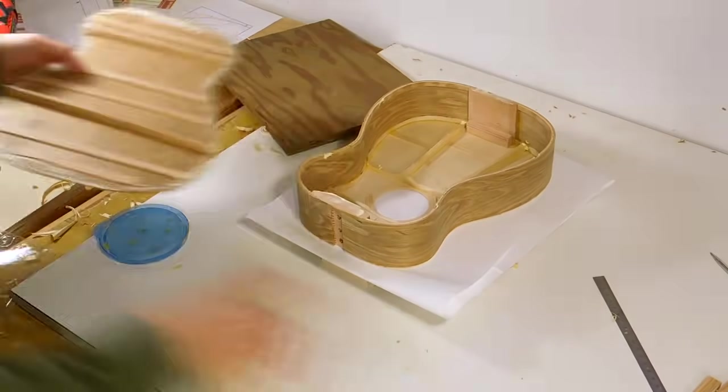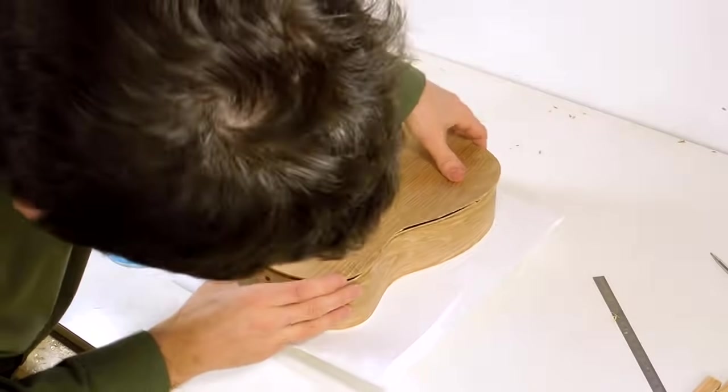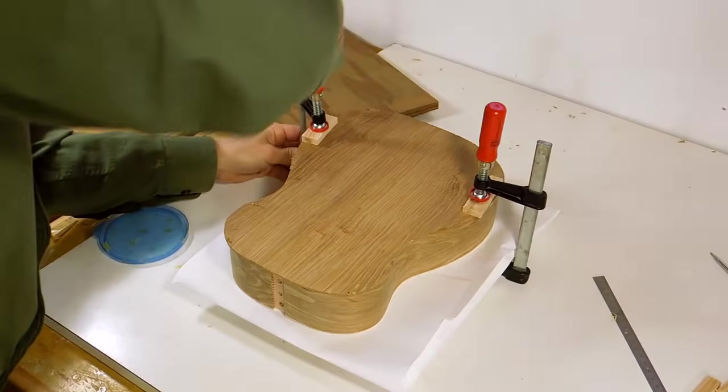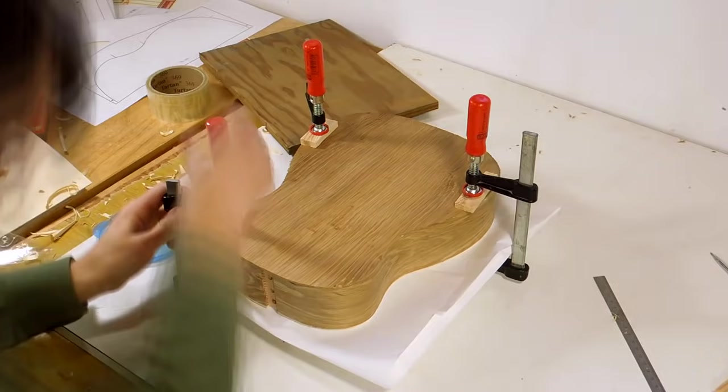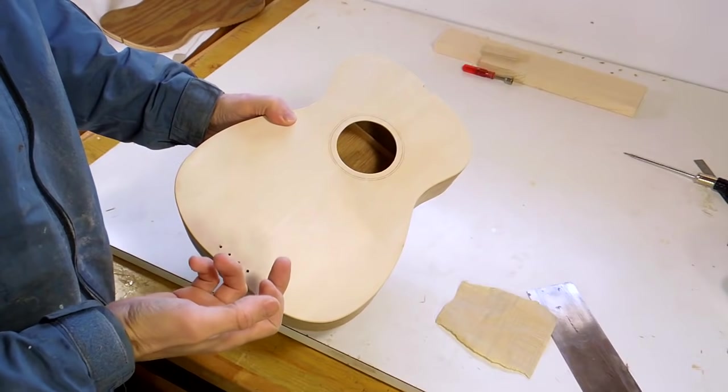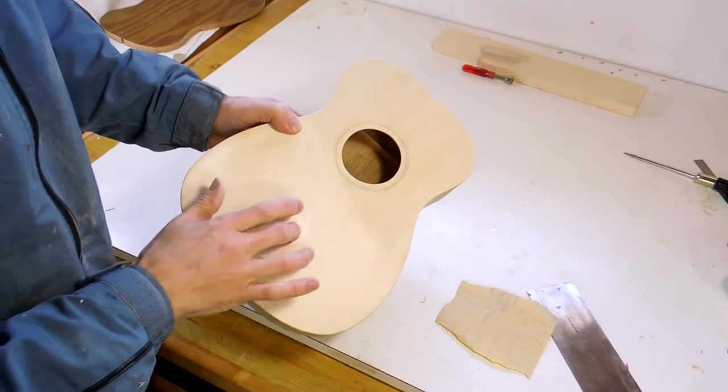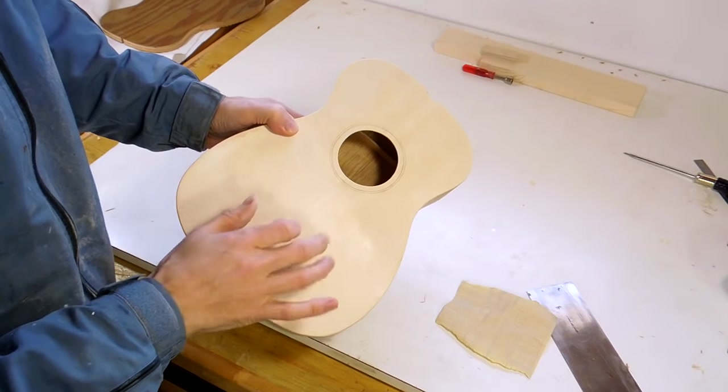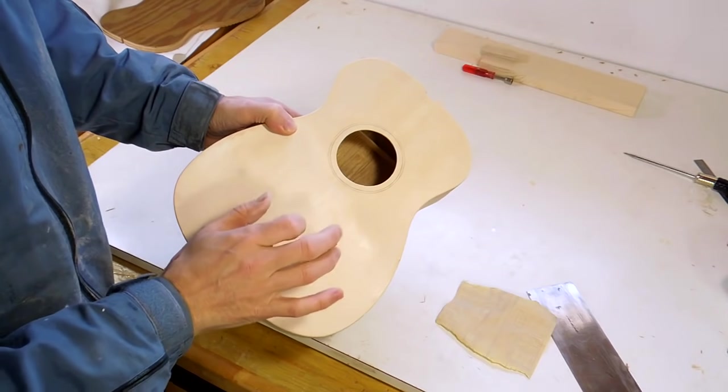And now I finally have enough confidence in this ukulele to glue on the back. It's interesting. You can hear where the braces are. So here it sounds more muffled. And this is on the brace.